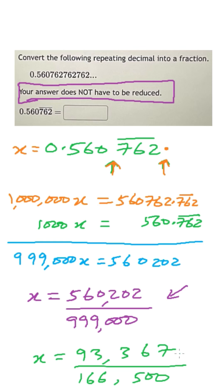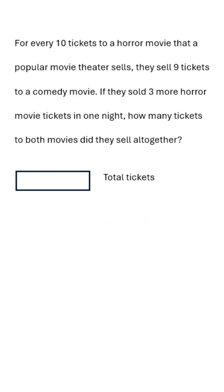So on calculator, if you do this, 933,367 divided by 166,500, you will see that the answer is 0.560, and then after that 762, 762, 762, it will be repeating. Now this is an easy one.